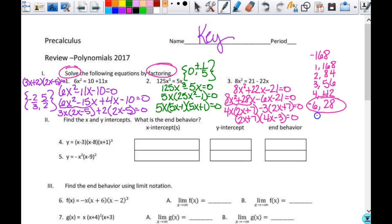So then I get 2x plus 7 times 4x minus 3 equals 0. So I've got it factored. My solutions then are going to be negative 7 halves and positive 3 fourths. And there you go. Factor, factor, factor. You need to be factor wizards.